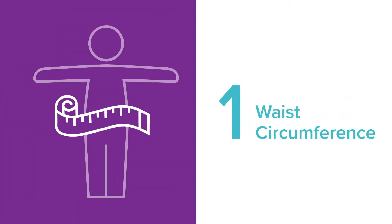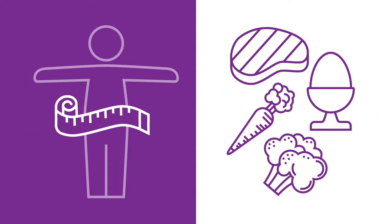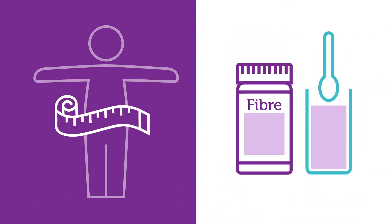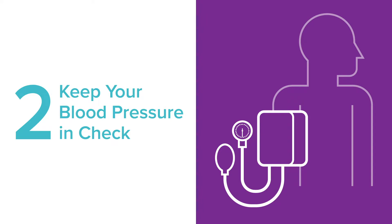Here's some things to watch out for. Waist circumference - aim to eat lean proteins and lots of non-starchy veggies. Take a soluble fiber supplement with your meals. Keep your blood pressure in check.